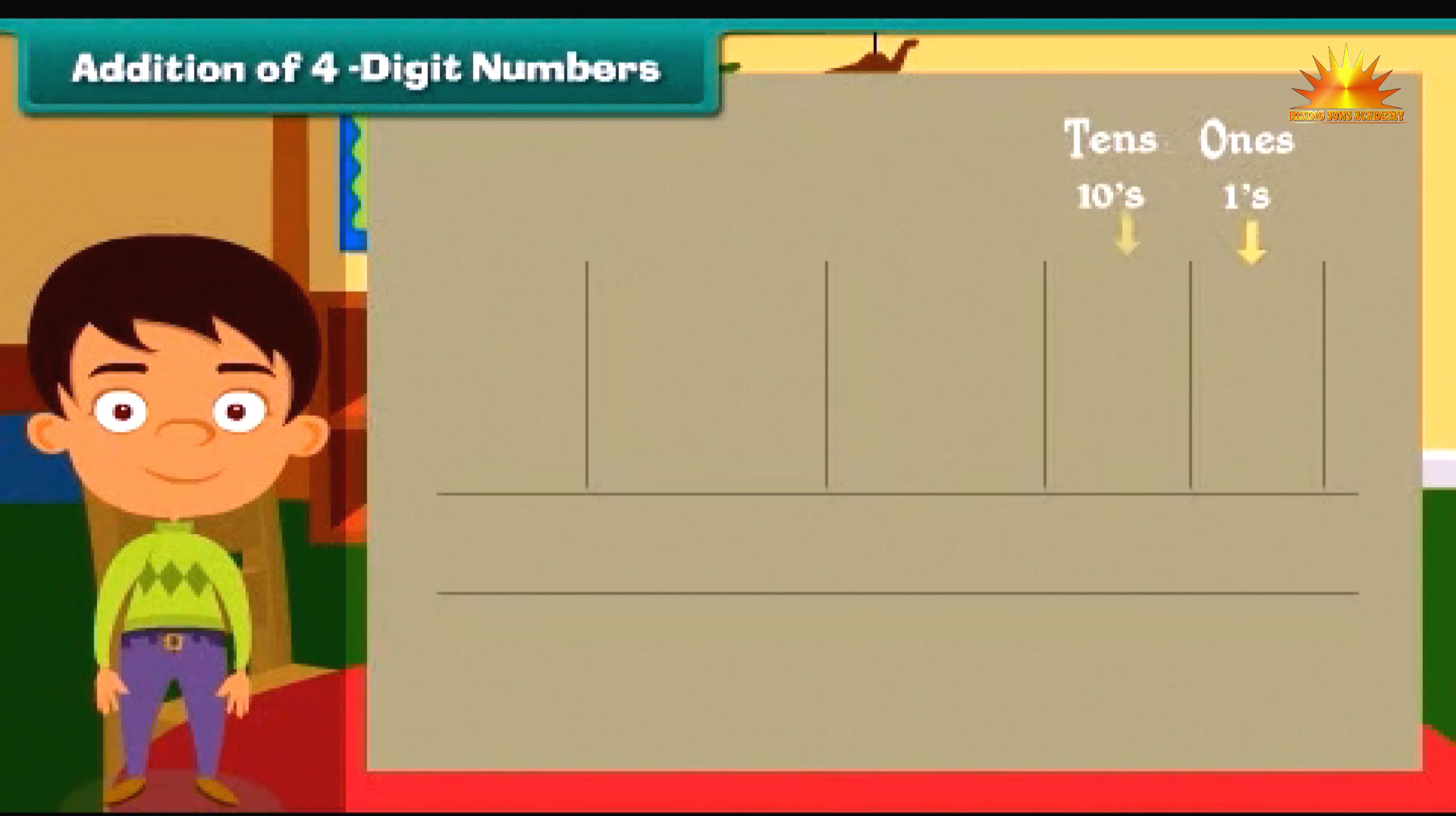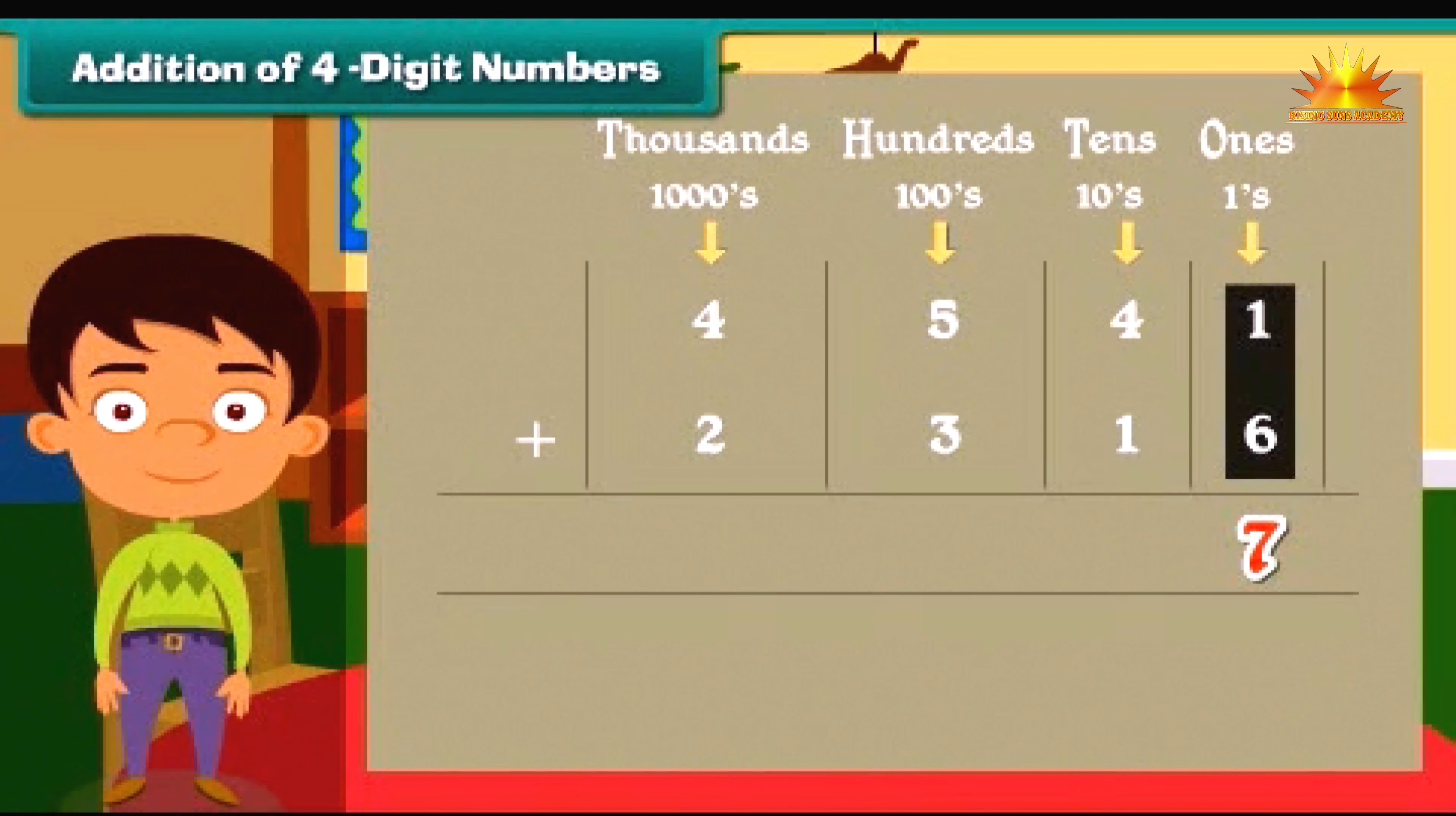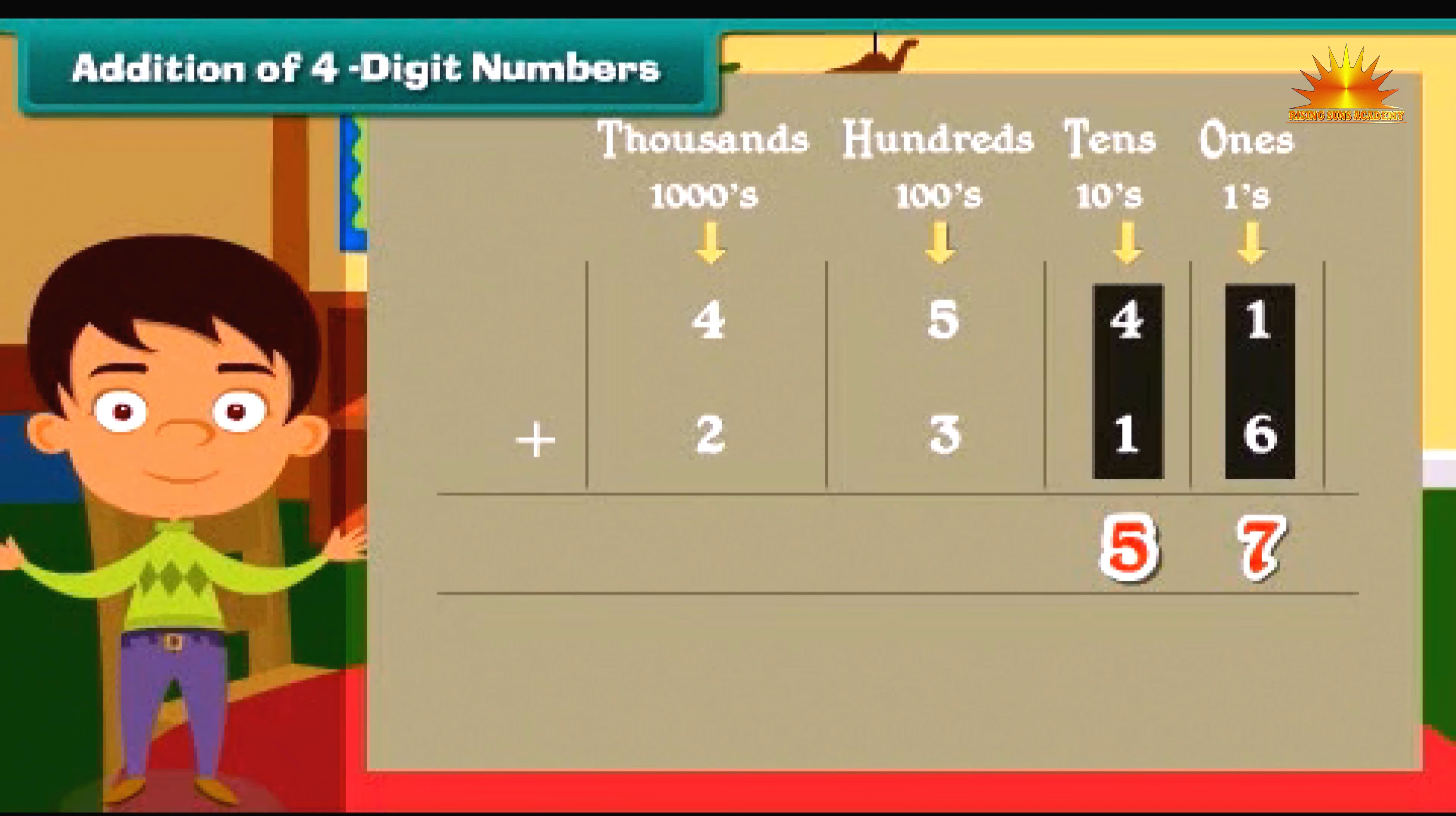Remember that we begin adding from ones. So here the addition is seven. Now we move to add the tens. Four plus one is equal to five. Similarly, we add the numbers under place hundred and thousands.